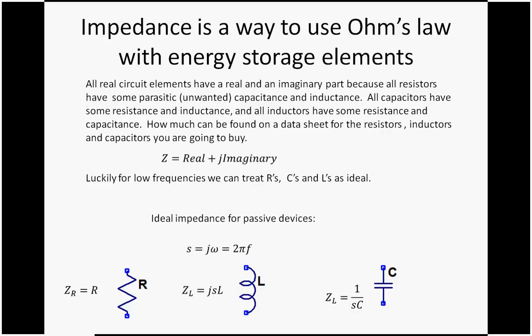How much parasitic resistance, capacitance, and inductance a passive device has can be found in the data sheet for when you go to buy them. It's not given in capacitance or farads or henrys. It's given in terms of impedance.